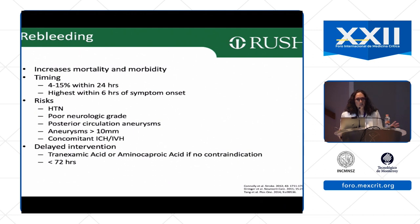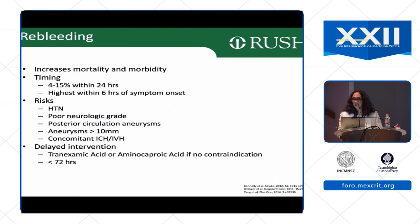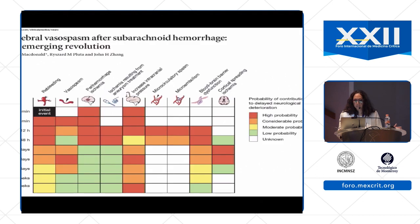One way to prevent re-bleeding is to use tranexamic acid or aminocaproic acid if there's no contraindication. For a high-grade patient with significant subarachnoid hemorrhage where treatment is going to be delayed, or when the aneurysm is not found, we start tranexamic acid for only 72 hours, and stop it at least three hours prior to treatment.